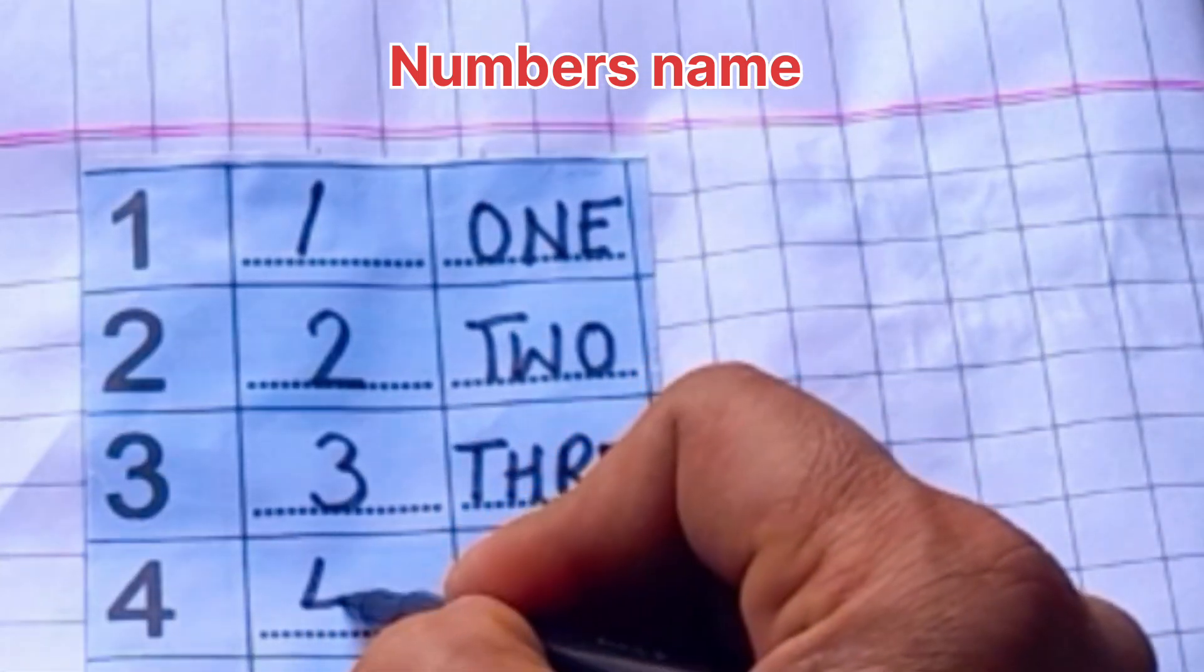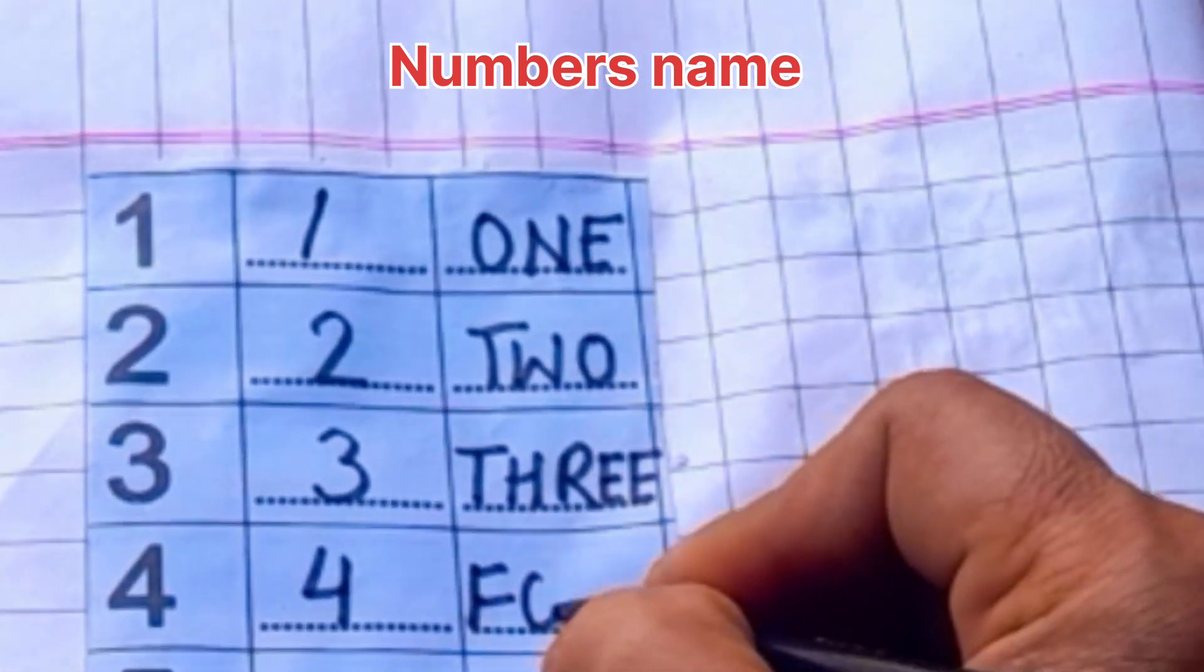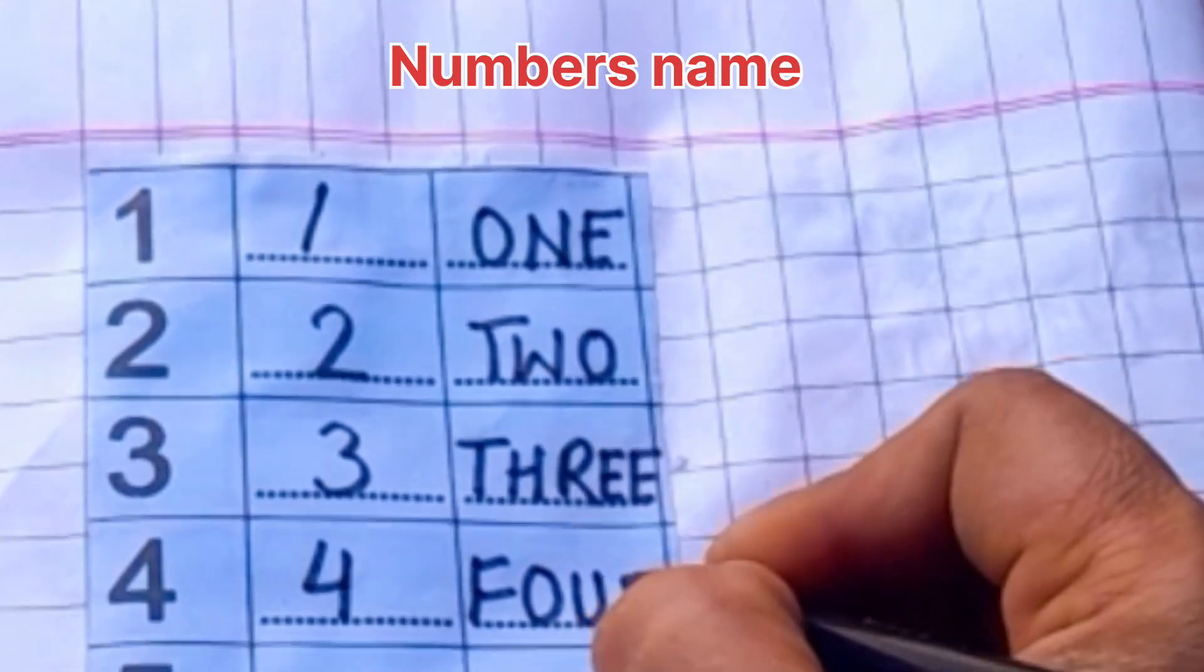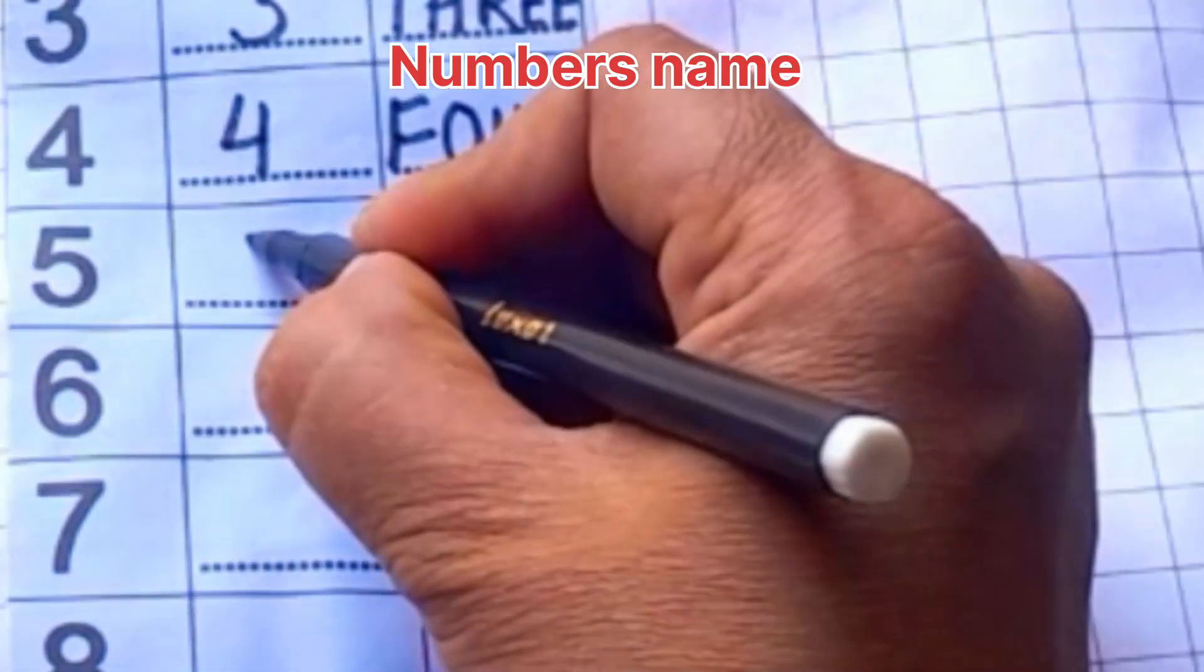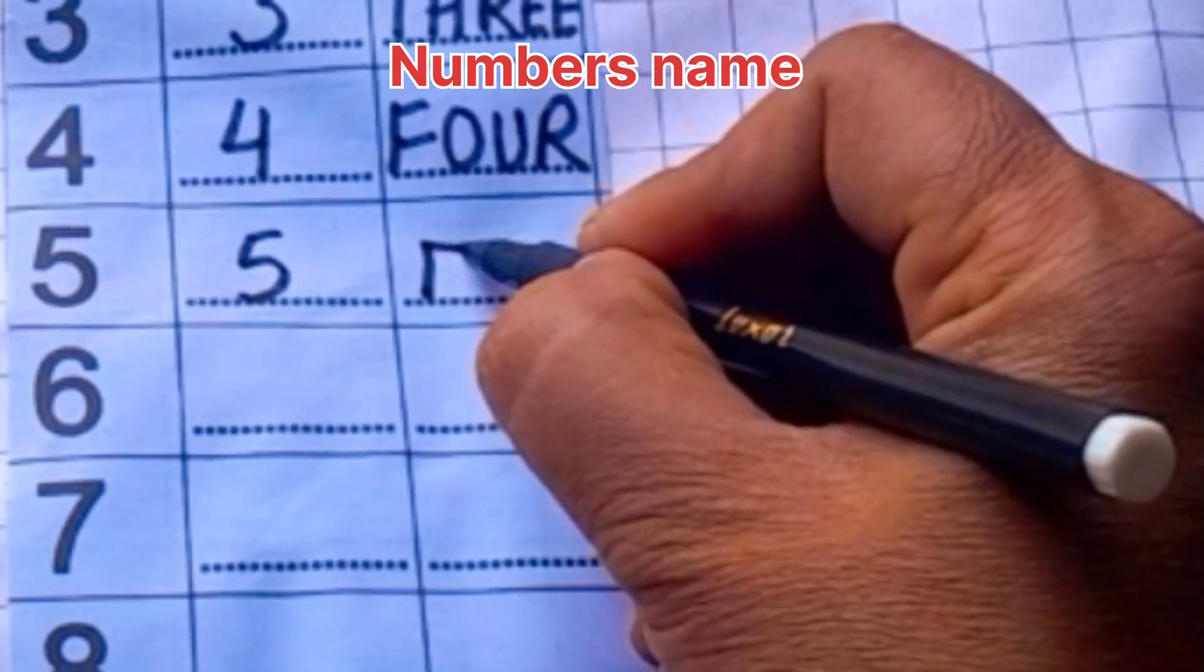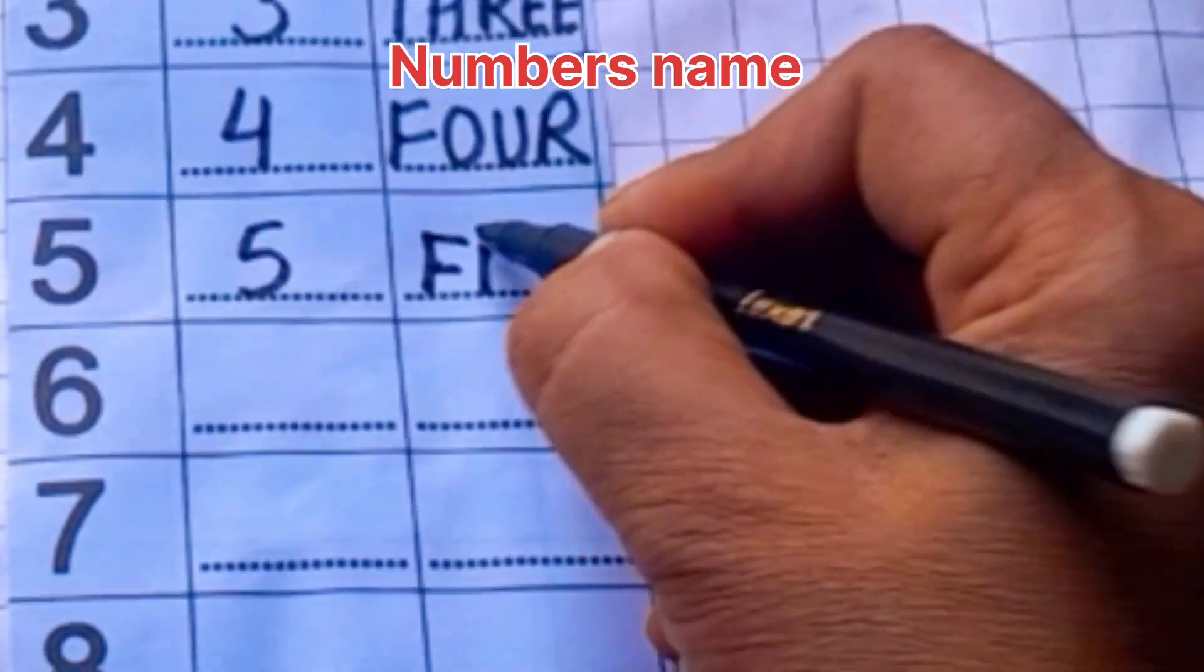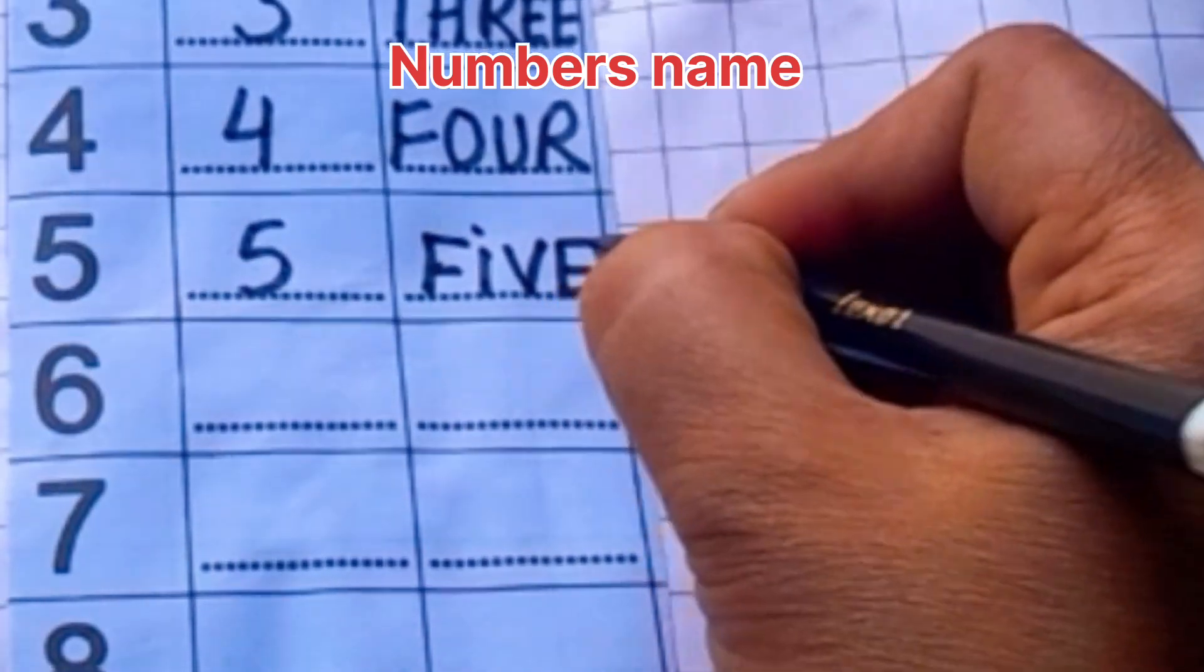Four. F, O, U, R. Four, five. Five, F, I, V, E. Five.